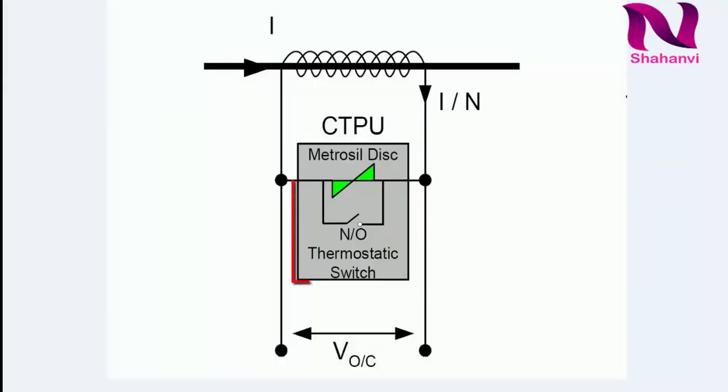Now we will discuss its thermostat and how it works. The thermostat switch manages the thermal cycling within the MetroCell current transformer protection unit when the current transformer is in an open circuit condition.